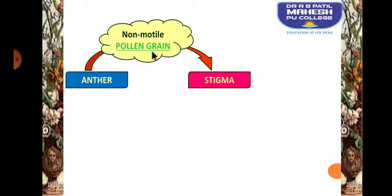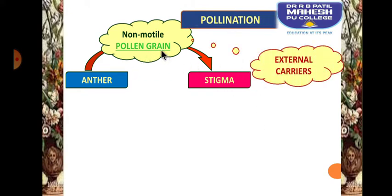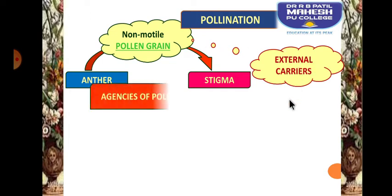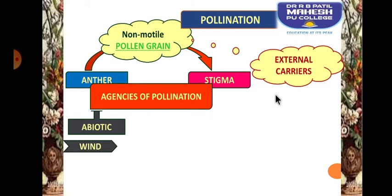In cross-pollination, the anther produces pollen grains. These pollen grains are non-motile, so they have to get transferred onto the stigma. Since pollen grains are non-motile, they are dependent upon external carriers. These different external carriers are called agents of pollination or agencies of pollination.